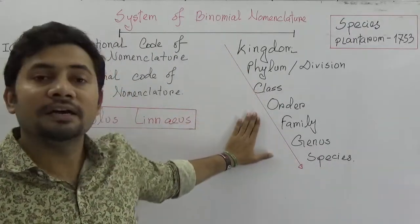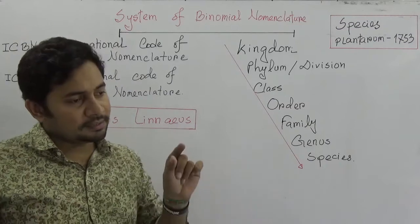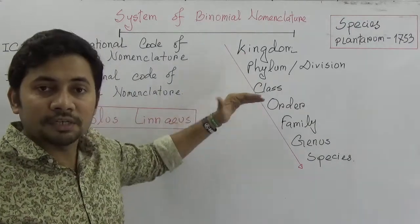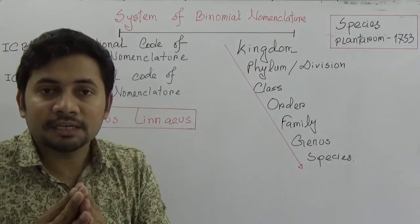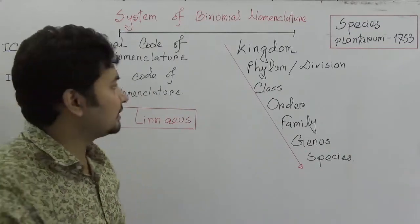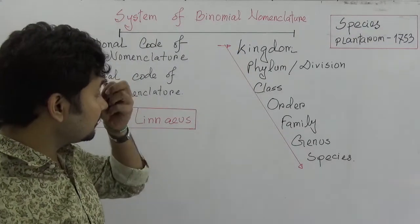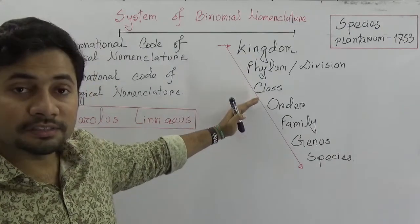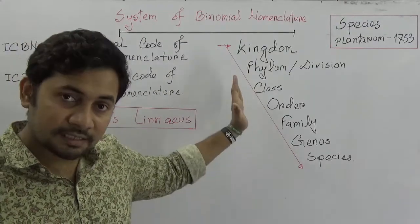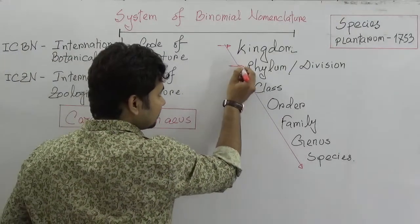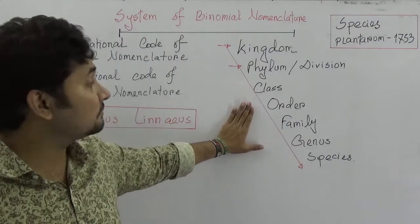Understanding classification involves a chronology of groups known as our classification system. There are some steps and rules to divide each and every single organism of every living kingdom in a specified and unified way. The largest step of classification is Kingdom, and the second unified code is Phylum or Division.